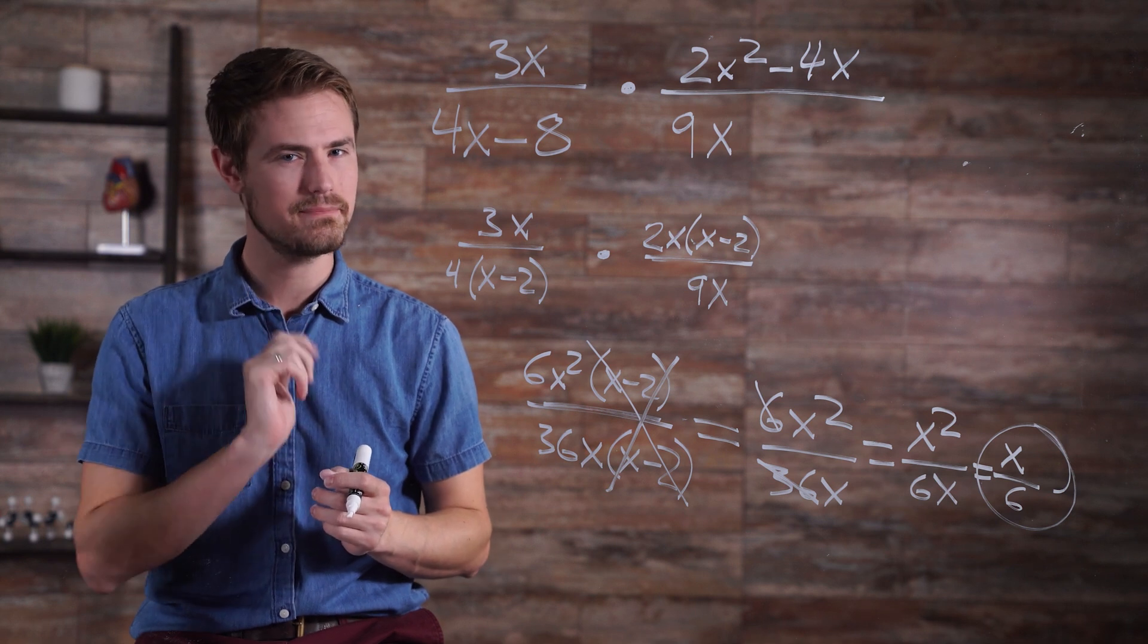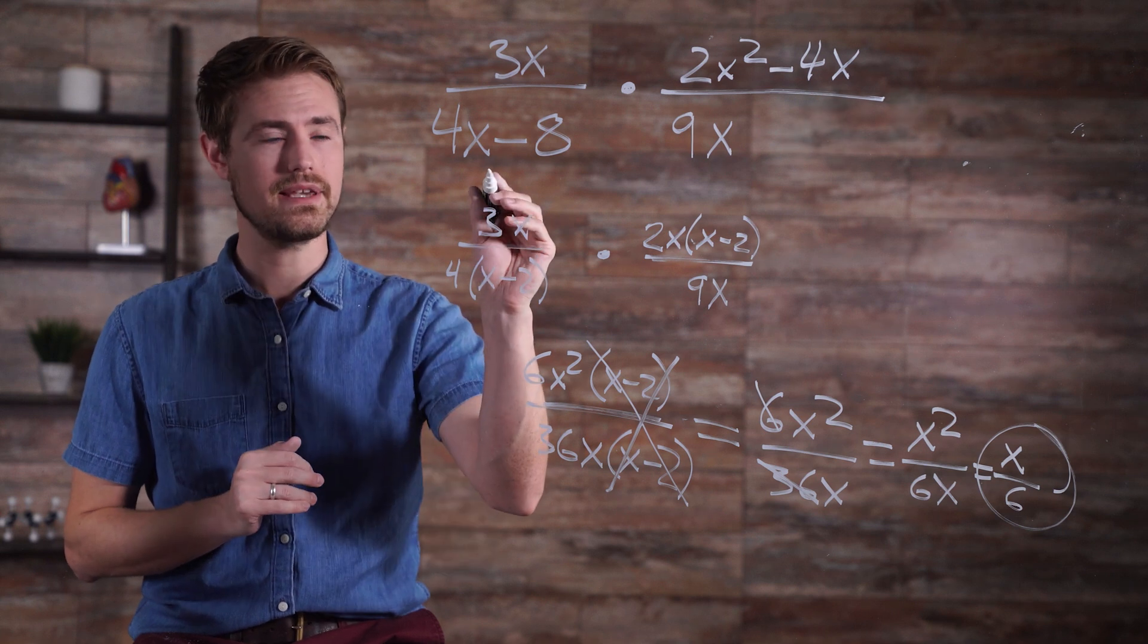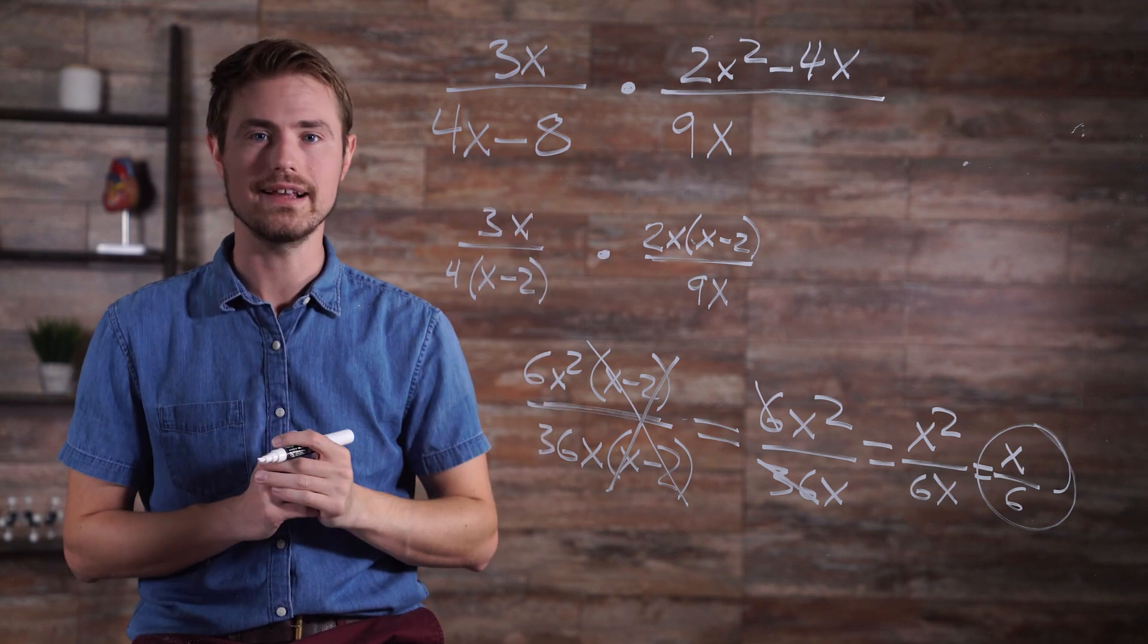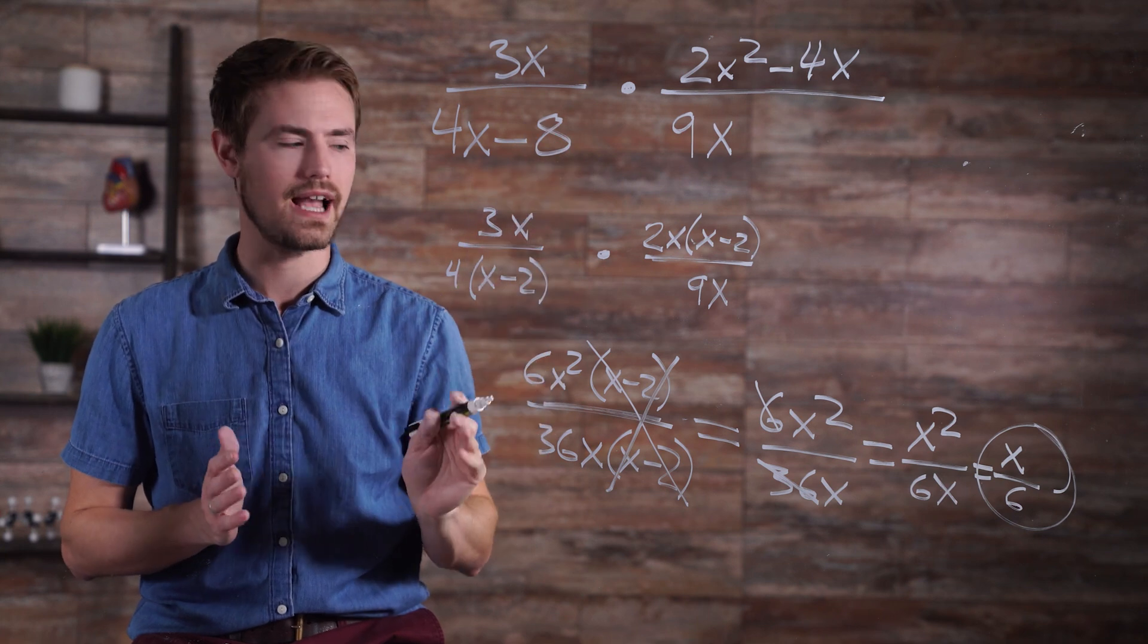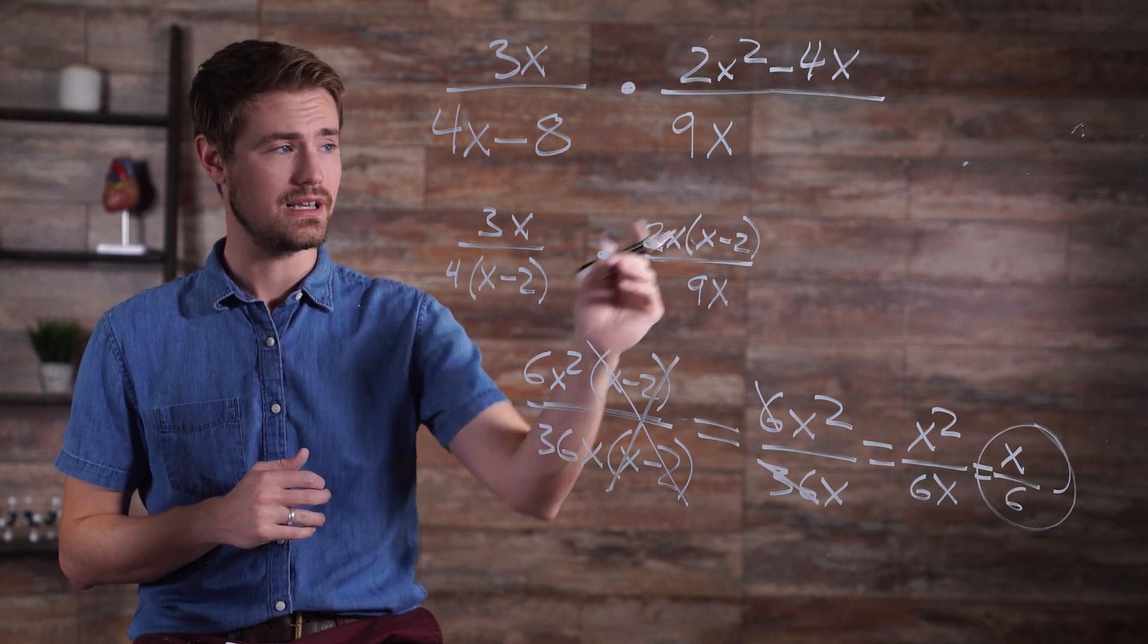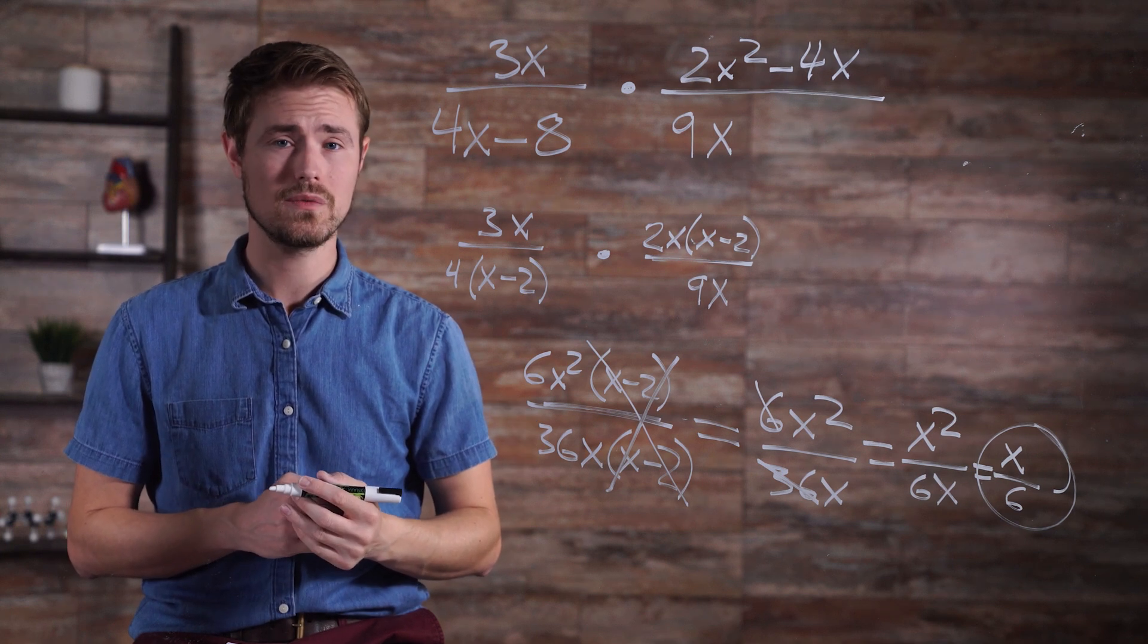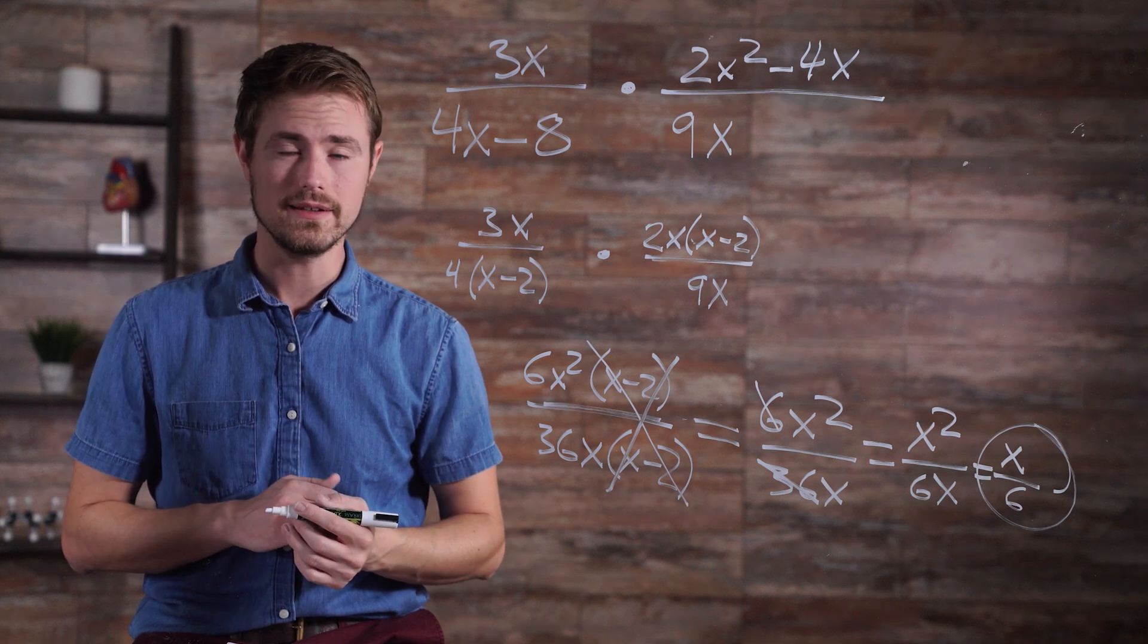But that's not the complete answer. Remember, we have some domains that we have to exclude. Up here, x cannot equal 2 because 2 times 4 minus 8 equals 0, and we can't have a 0 in the denominator. So x cannot equal 2. Also, x can't equal 0 because 0 times 9 would equal 0, and again, give us a 0 in the denominator. So the domains that we have to exclude from this answer are 2 and 0. So our answer is x over 6 where x does not equal 2 or 0.